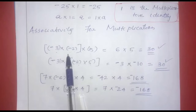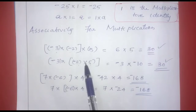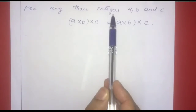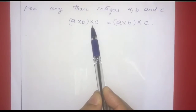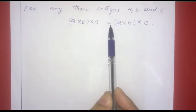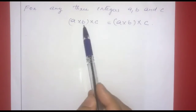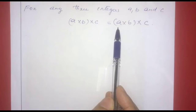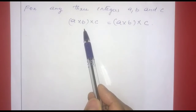If we choose any three integers and group them differently, we get the same answer. That is why we call it the associative property of multiplication.